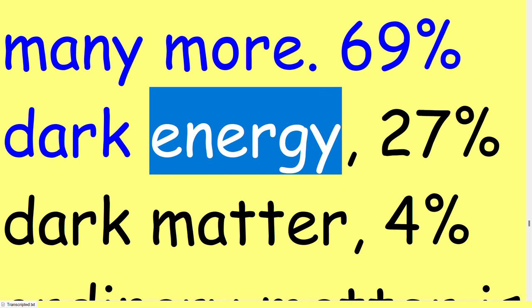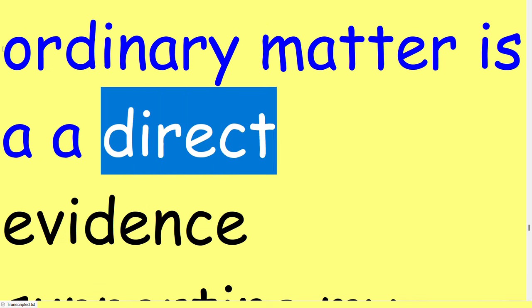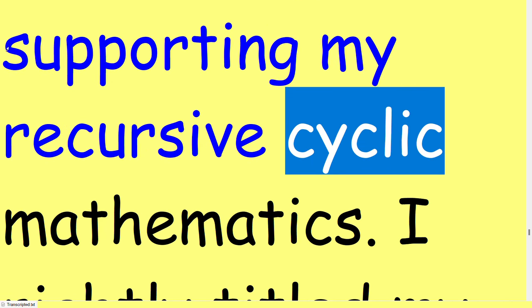69% dark energy, 27% dark matter, 4% ordinary matter is direct evidence supporting my recursive cyclic mathematics.